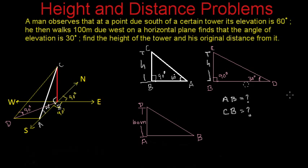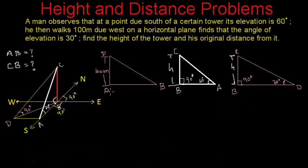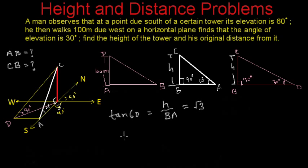Let's rearrange the drawings and start solving. From the triangle ABC with angle A equal to 60 degrees and angle B equal to 90 degrees, tan 60 equals height divided by BA, and since tan 60 is root 3, we get BA equals H divided by root 3. So distance BA is H over root 3.